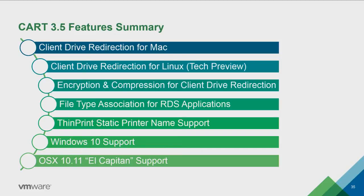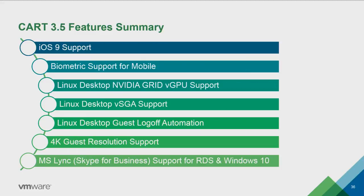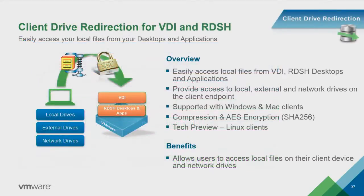We also have client and agent release train version 3.5 functionality. You will get a copy of these slides, normally sent out about a week after the event. Let's start with the first client feature: client drive redirection.